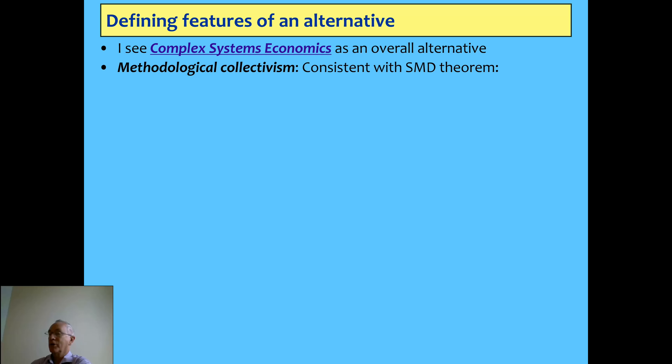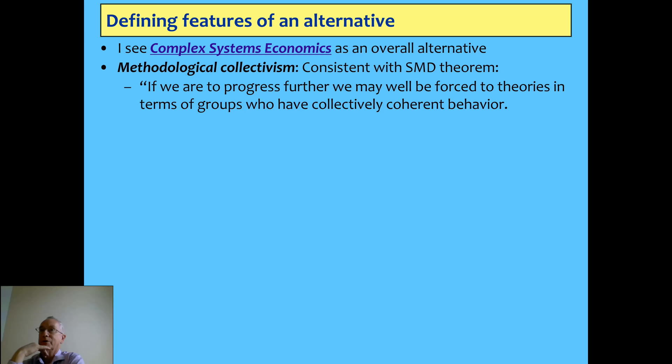I see complex systems as an alternative — an overarching alternative for a non-orthodox, non-neoclassical way of modeling the economy. It starts with methodological collectivism rather than saying you work with individuals; you have to work at the level of social aggregates. This is something which the neoclassicals themselves proved and have been ignored on. Has anybody read any of the papers on the Sonnenschein–Mantel–Debreu theorem?